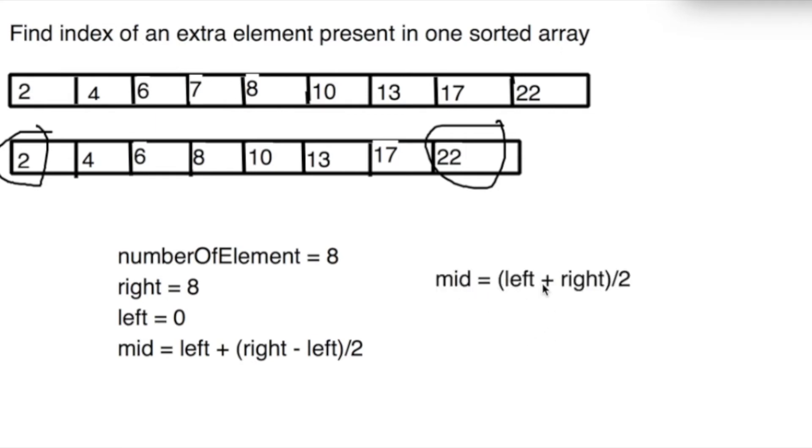Mid could have been written as left plus right divided by 2, but in some cases an overflow might happen, so we are using this. Now let's go through the algorithm using our binary search.